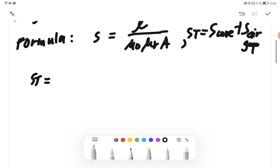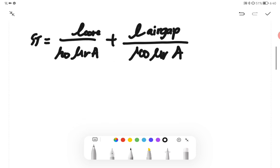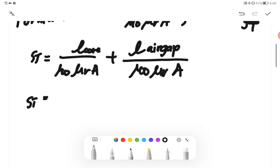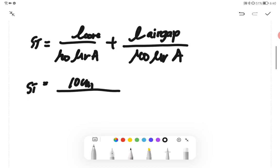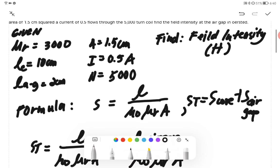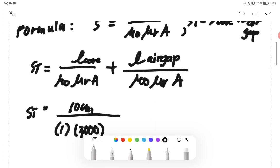So we have ST equals L core over μ₀μᵣA plus L air gap over μ₀μᵣA. What's our L core? 10 cm. The μ₀ is simply 1, and then our μr which is 3,000. The area for this one is 1.5 cm.